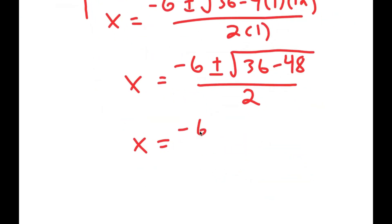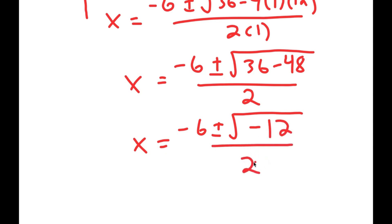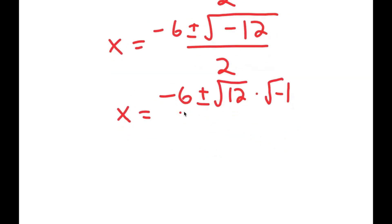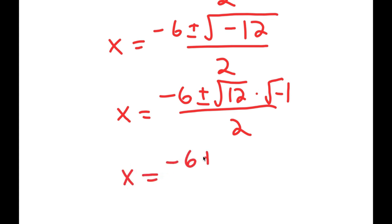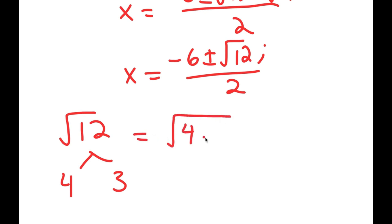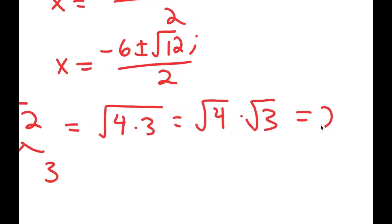This is equal to negative 6 plus or minus the square root of 36 minus 48, over 2 times 1, which is 2. And this is equal to negative 6 plus or minus the square root of 36 minus 48, which is negative 12, over 2. From here, you get negative 6 plus or minus the square root of 12 times the square root of negative 1. The square root of negative 1 is the same thing as the imaginary number i. The square root of 12 is the same thing as the square root of 4 times 3, which equals the square root of 4 times the square root of 3. The square root of 4 is 2, so this equals 2 root 3.